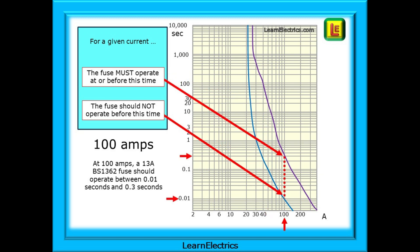At 100 amps of current, the red dotted line that is joining the blue and purple curves moves to the right, as this is a higher current. It also moves down the graph, indicating that a quicker fusing time is required by the standards. At 100 amps, a 13 amp BS 1362 fuse should operate between 0.01 seconds and 0.3 seconds.